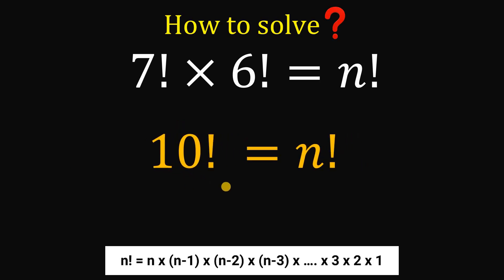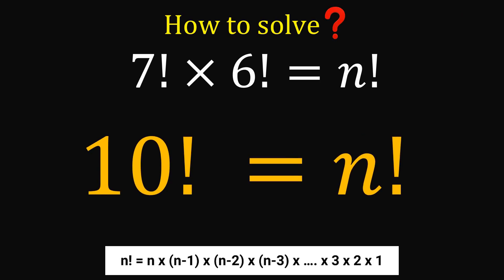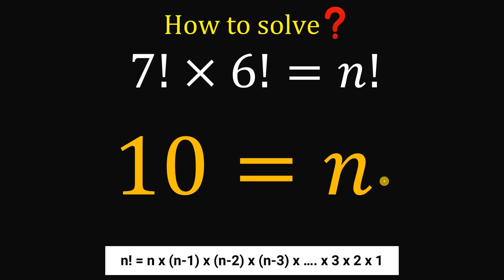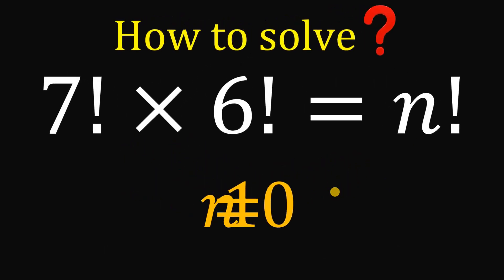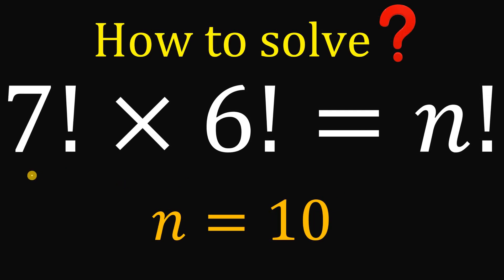So we have 10 factorial equals n factorial. Since both sides are equal, we can eliminate the factorial symbol, giving us n equals 10. Therefore, the value of n that satisfies 7 factorial multiplied by 6 factorial equals n factorial is n = 10.